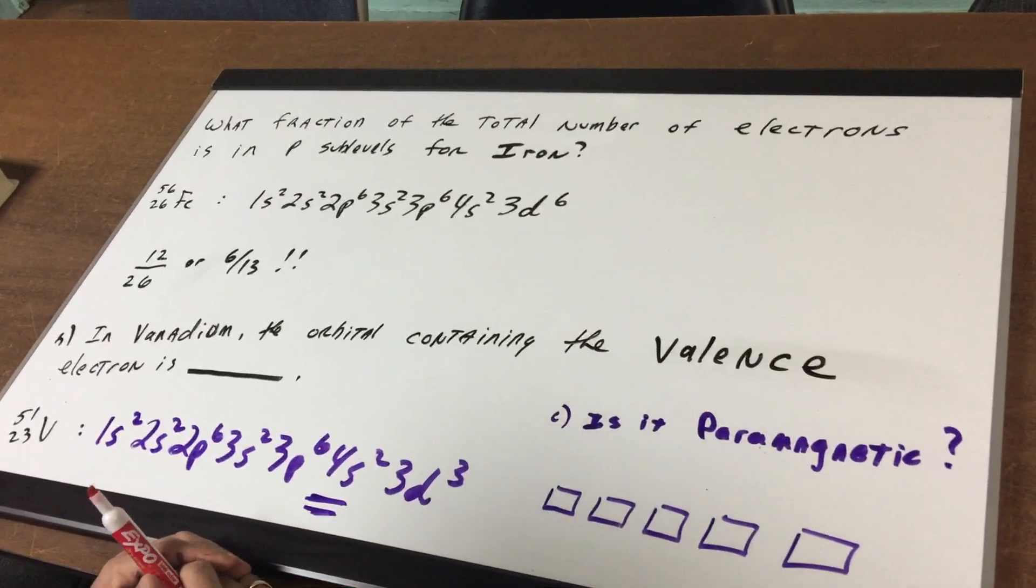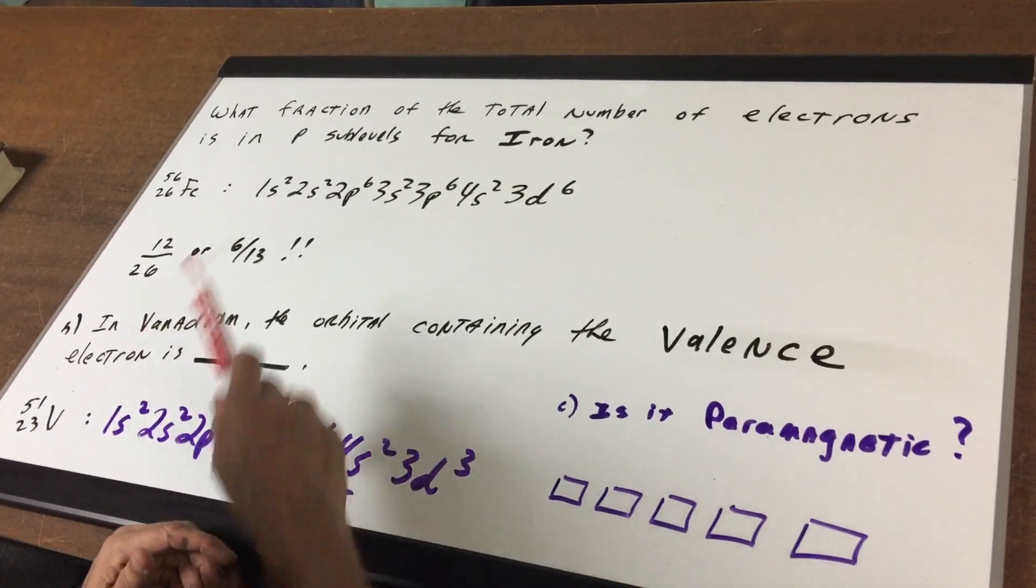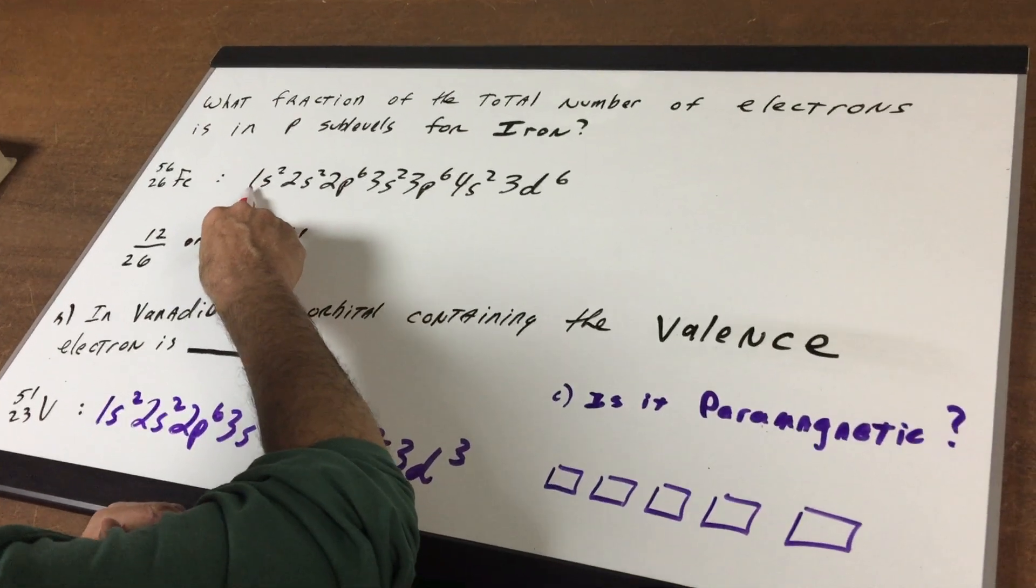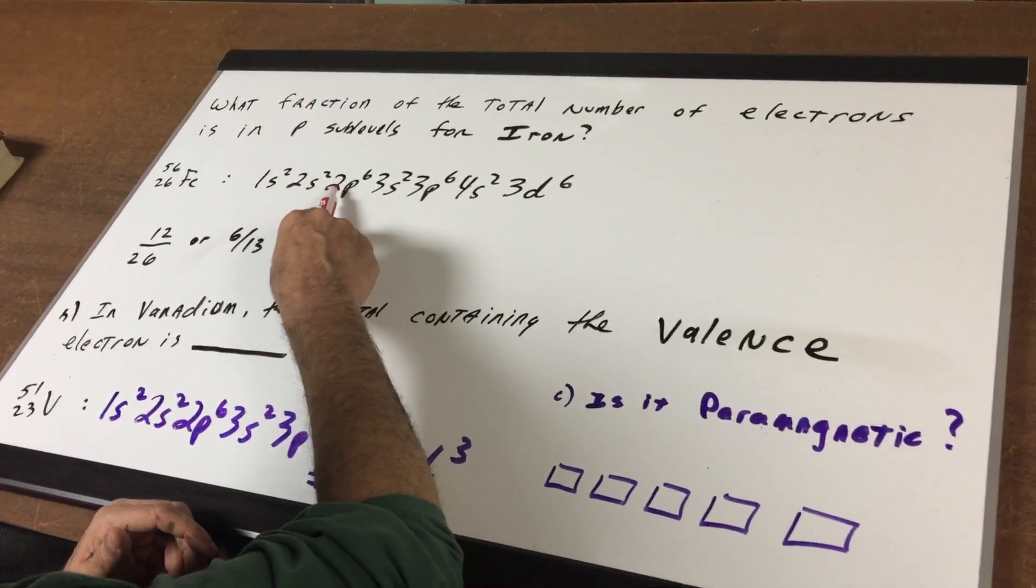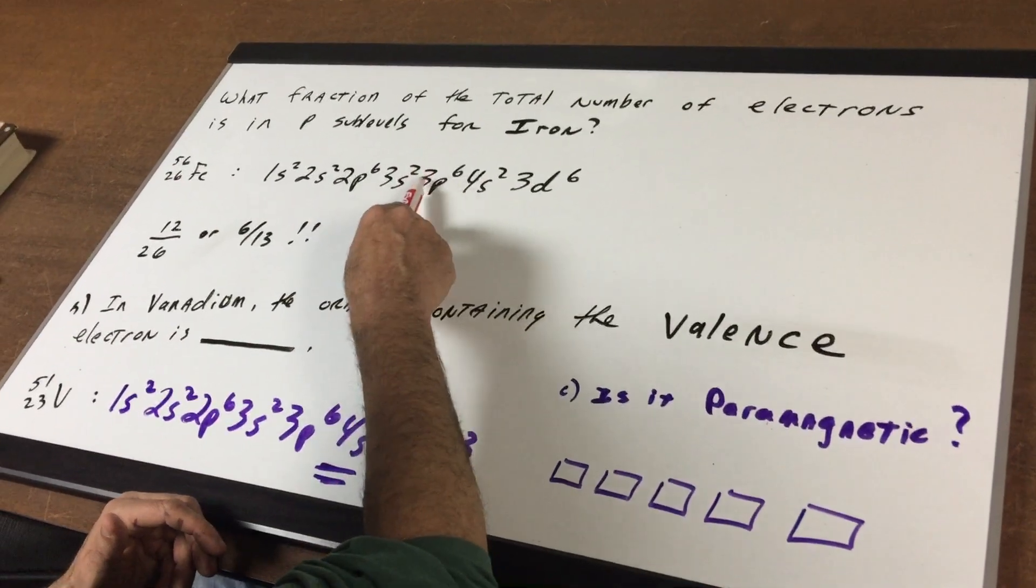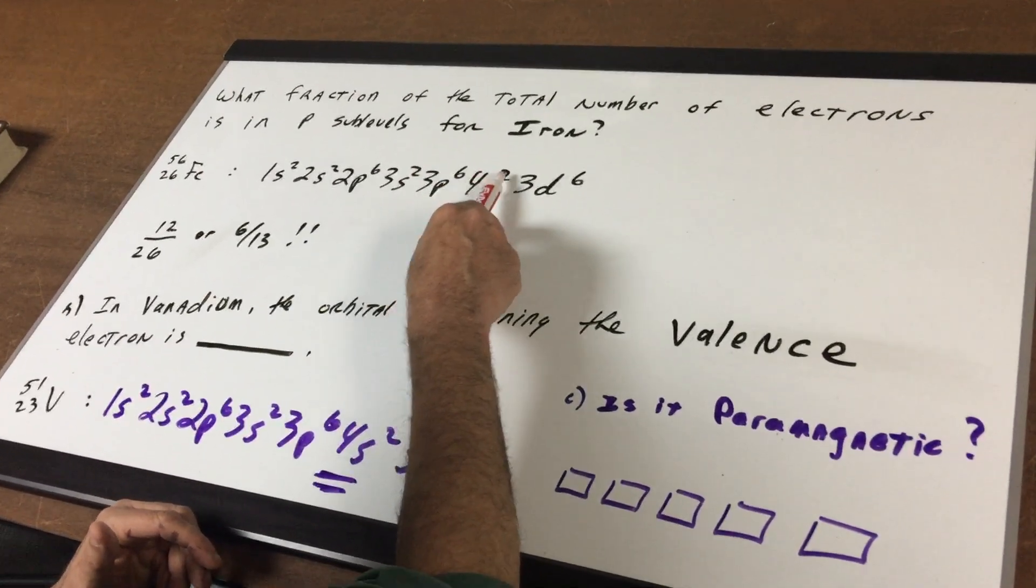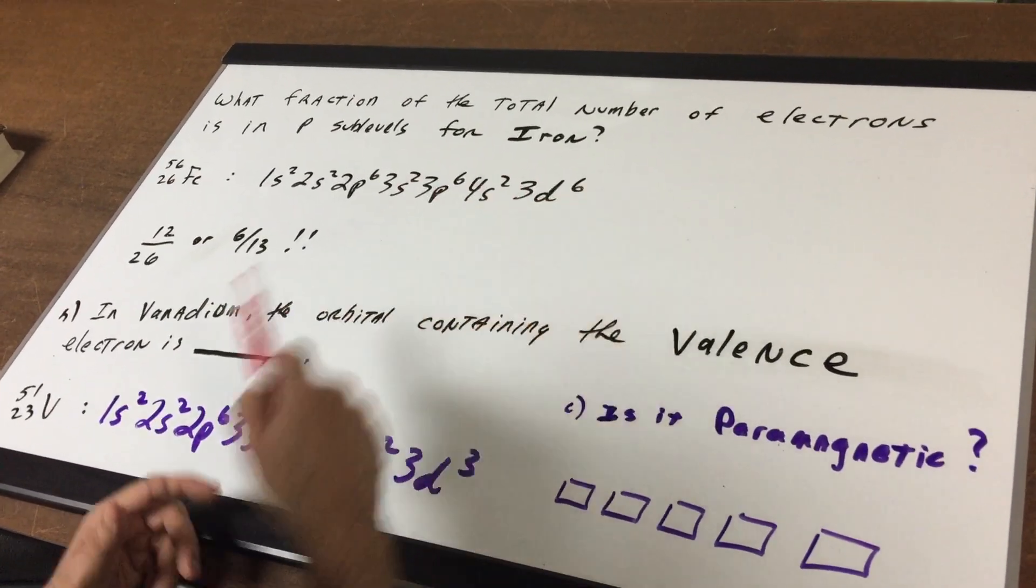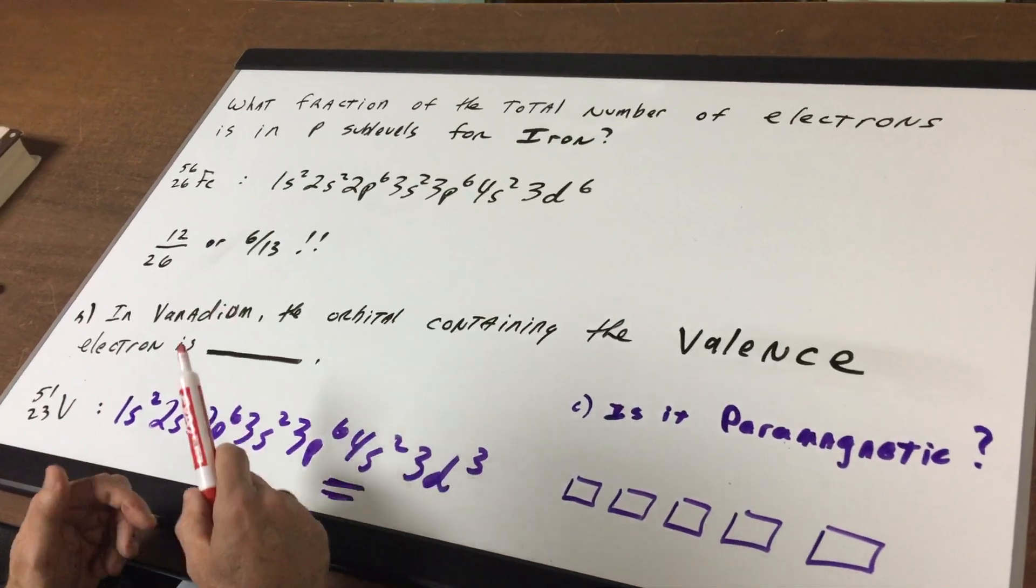So what I'm gonna do is use the Aufbau principle and I'm gonna fill up the electrons: 1s2, 2s2, 2p6, 3s2, 3p6, 4s2, 3d6 and that gives me the total of 26.